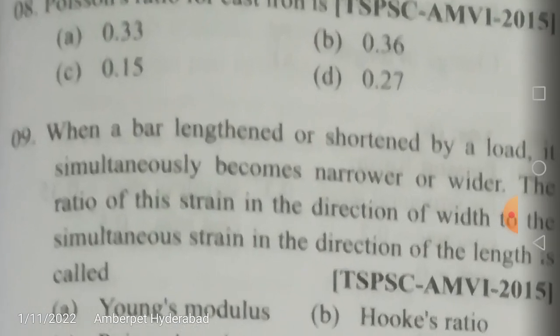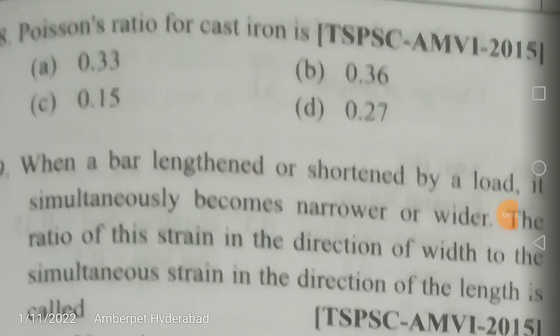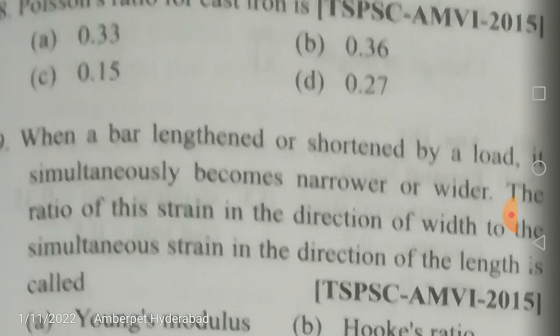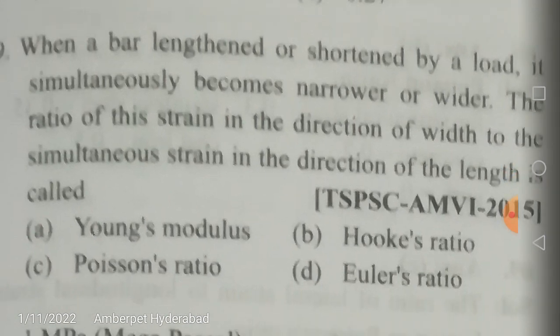The Poisson's ratio for cast iron is 0.27, which is less than mild steel because cast iron is a brittle material. Most materials have Poisson's ratio ranging from 0.25 to 0.33. A value of 0.15 is ruled out, 0.36 is not typical, and 0.33 is the Poisson's ratio for aluminum. The correct answer for cast iron is 0.27.